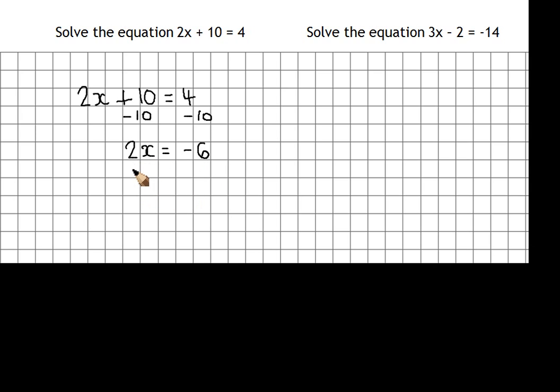Now, 2 lots of x, or 2 times x is minus 6, so dividing both sides of the equation by 2. 2 divided by 2 is just 1, so it's going to be 1x. And then a minus divided by a plus is a minus, so 6 divided by 2 is 3. Minus divided by a plus is a minus 3, so x is minus 3, equation done.